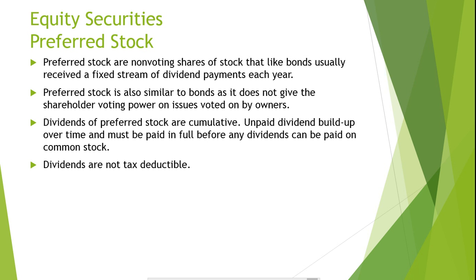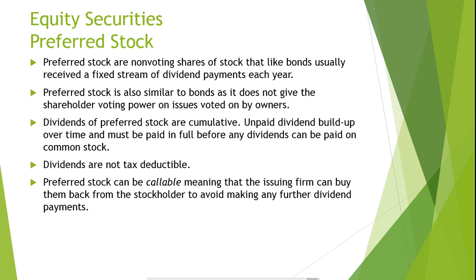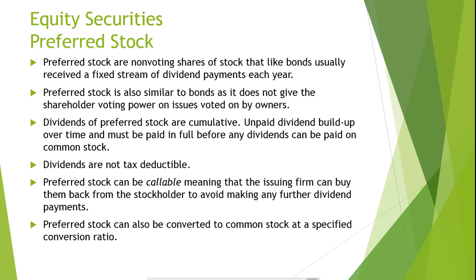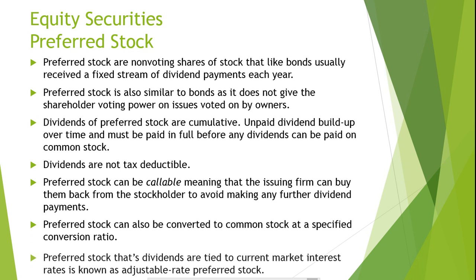Preferred stock can also come with certain attachments similar to corporate bonds. For example, preferred stock can be callable, meaning that the issuing firm can buy them back from stockholders to avoid making any further dividend payments. Preferred stock can also be converted to common stock at a specific conversion ratio. In recent years, financial innovation has taken place where the dividends on preferred stock are tied to current market interest rates; these are known as adjustable rate preferred stock.